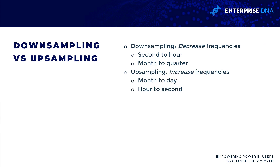To break this down a little further: downsampling — D for downsampling — is to decrease that frequency. So this would be things like converting from second to hour, so we're going to have fewer values. We're decreasing the frequency of reporting, we're downsampling. Month to quarter, anything along that hierarchy.